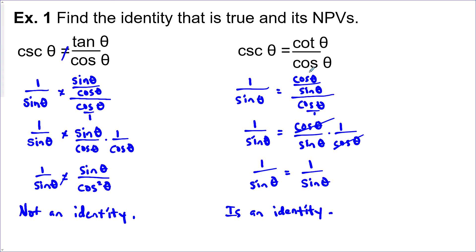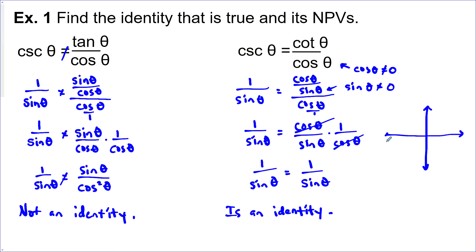The two sides do have different non-permissible values because there's a cos in the denominator on one side. But an identity is true for all permissible values. Let's find the non-permissible values: cos theta cannot equal 0, and sine theta cannot equal 0 either. These would be all our quadrantal angles — where cos is 0 would be the y-axis, and where sine is 0 would be the x-axis. So theta cannot equal pi over 2n, where n is an integer.